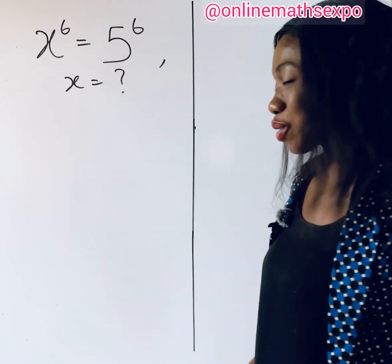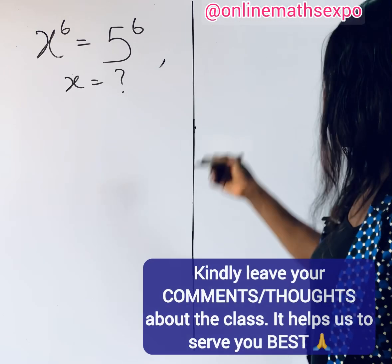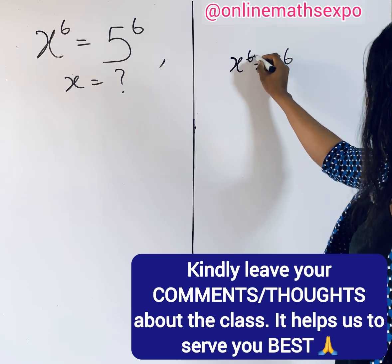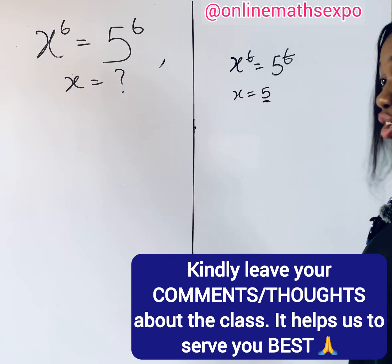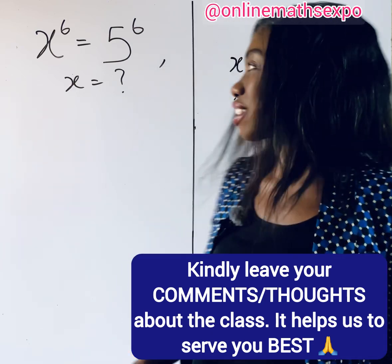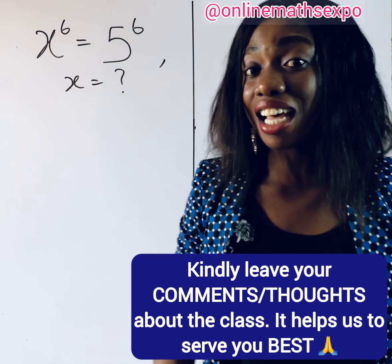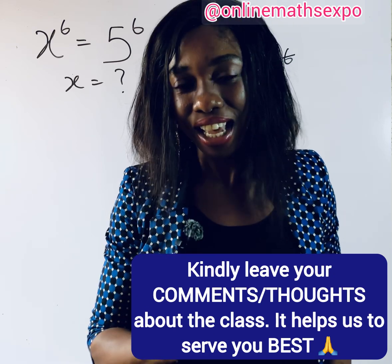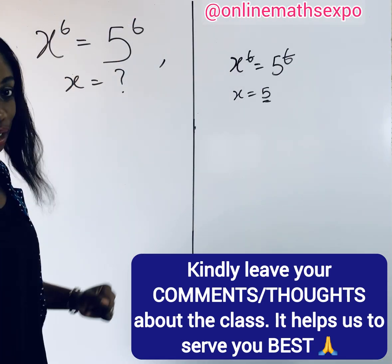When you see this kind of exponential equation, what comes into your mind? Are you the type that does it this way — just saying x to the power of 6 is equal to 5 to the power of 6, then observing that the powers are the same, canceling them, and saying x is equal to 5? You are right, but that's not the only solution for x. Observe carefully that the highest power of x here is 6, so we are expected to have 6 values of x. Let me show you what to do when you see this kind of exponential equation.